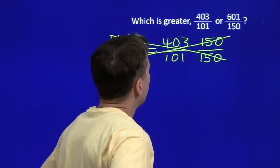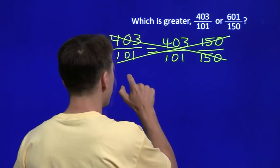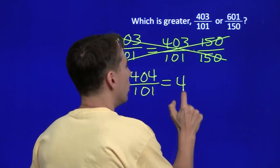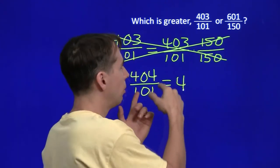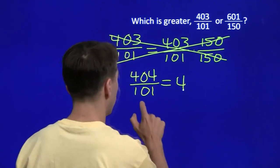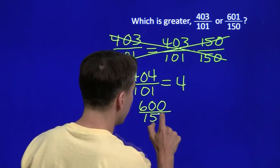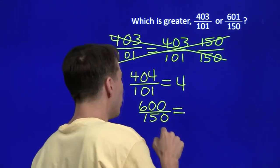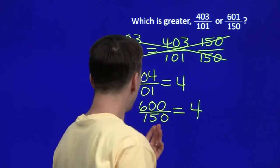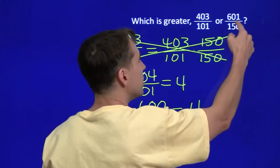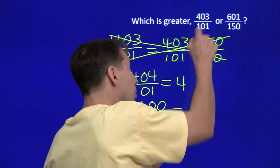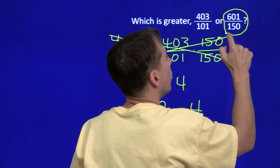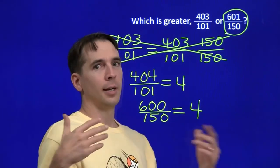403 over 100. Well, 404 over 101, that's easy. 404 over 101, that's just 4. So we see that this number is just a little bit less than 4. How about this? 600. 600 over 150, that one's easy, too. Now, all we're doing is comparing these numbers to nearby numbers that are easy. 601 is a little bit more than 600 over 150. 600 over 150 is 4. So this number is a little bit more than 4. And 4 is a little bit more than that number. So this number must be larger than that number. All we do here is just remember, fractions are numbers. And we're done.